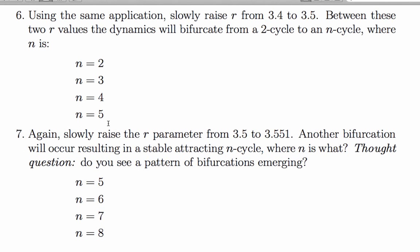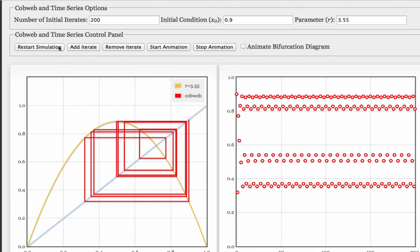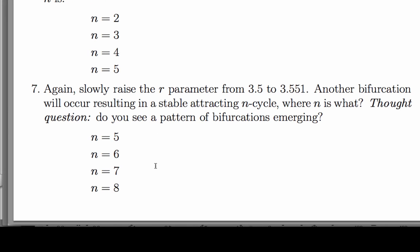Let's explore one more range from 3.5 to 3.55 to 3.551. The 4-cycle has turned into an 8-cycle. So the answer to the 7th problem is 8. And the thought question here, we went from 1 to 2 to 4 to 8. So what you're seeing is what's called a period doubling bifurcation sequence.